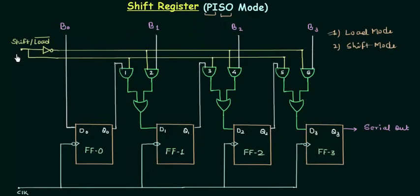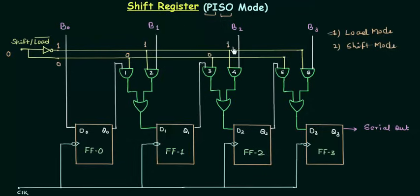For the load mode you need this input that is shift/load complement. I have used the load complement here because we have loading when the input is low — this is an active low signal. So when it is 0, we have 1 because of the NOT gate here and 0 here. For AND gate number 1 the first input will be 0, for AND gate number 2 the first input is 1. Similarly for 3 we have 0, for 4 we have 1, 5 we have 0 and 6 we have 1. The other input to AND gate number 1 is Q0, so the output is 0. For AND gate number 2 the other input is B1, and 1 AND B1 gives us B1.